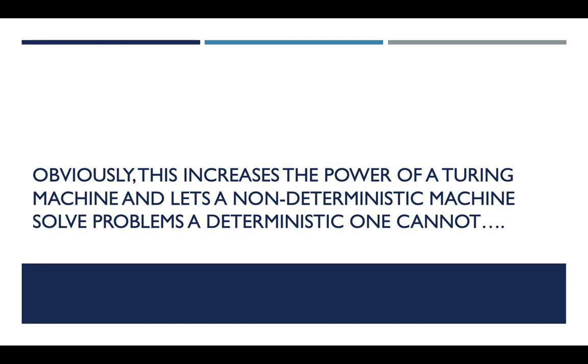The obvious thing you might be thinking is that because we can now effectively perform multiple transitions at the same time and arrive at multiple configurations concurrently, we have obviously improved the computability of the machine, or we've allowed it to solve problems it otherwise would not be able to solve. Is that correct? It seems like it should be correct, but it's actually not. Non-deterministic machines are actually capable of solving the exact same set of problems that a deterministic machine is able to compute or solve. There are some hand-wavy answers to related questions that we're going to talk about at the end of the video.